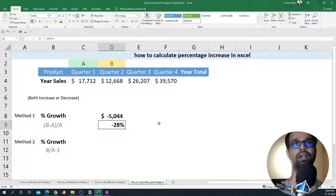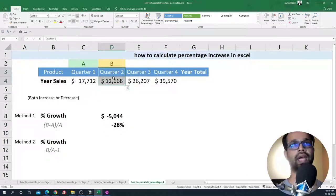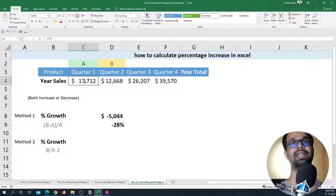Now this formula, what we essentially did is we took the latest quarter and subtracted the quarter one value from the quarter two value. Then we divided the difference by quarter one's value to get the percentage increase or decrease. That's how you should be looking at this particular formula.